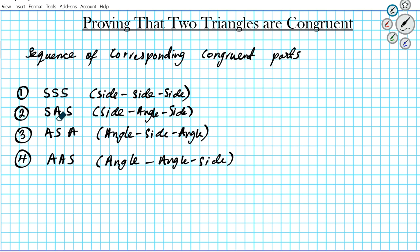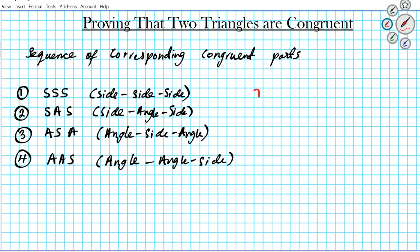For SSS, one S means a pair of corresponding sides are congruent, the next S means the next pair of corresponding sides are congruent, and the last S means the last pair of corresponding sides are congruent. For SAS, you have a sequence of side, angle, side, where the angle has to be between the two sides. For ASA, the side is included between the two angles. And AAS is angle, angle, side.